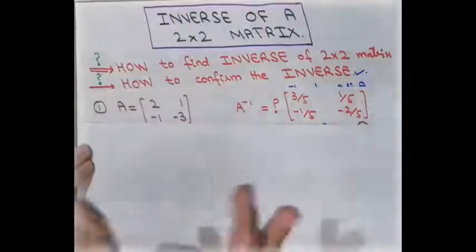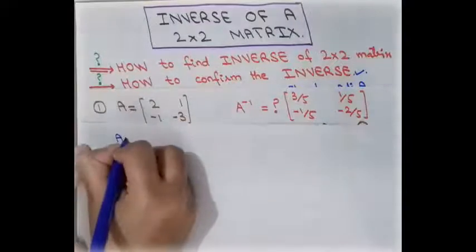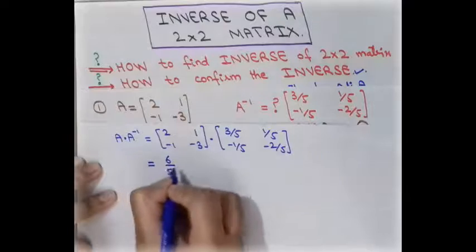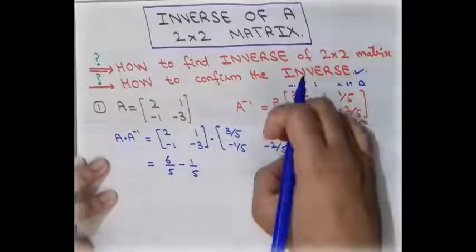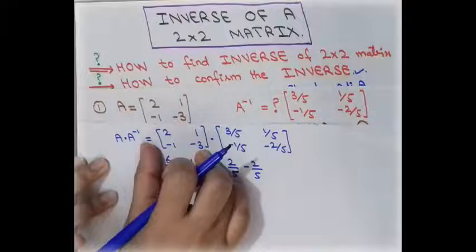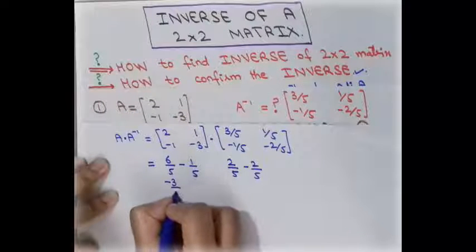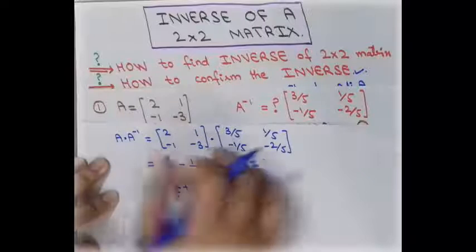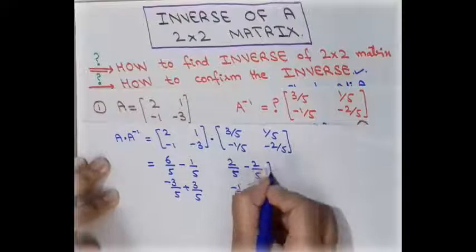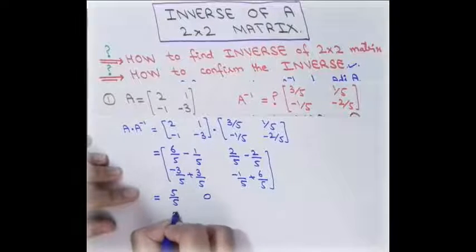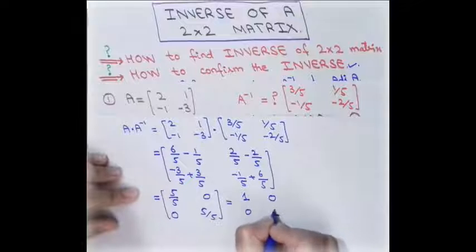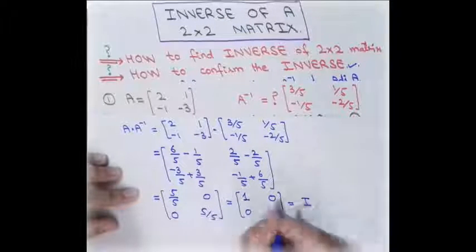To confirm the inverse found in example one, we compute A multiplied by A inverse. Multiplying row by column: 6/5 minus 1/5 gives 5/5 = 1; 2/5 minus 2/5 gives 0; then −1/5 plus 6/5 gives 5/5 = 1; and 0. The result is the identity matrix with 1s on the diagonal and 0s elsewhere, confirming that our computed inverse is correct.